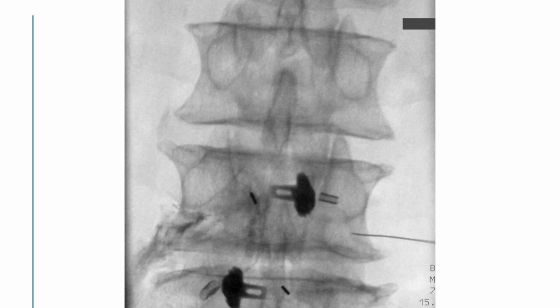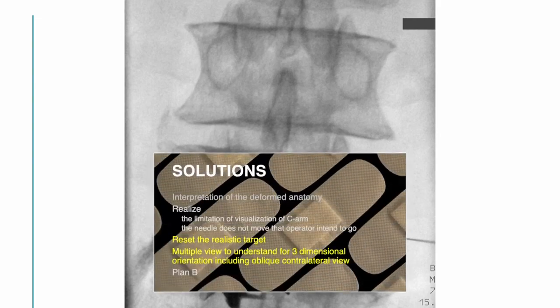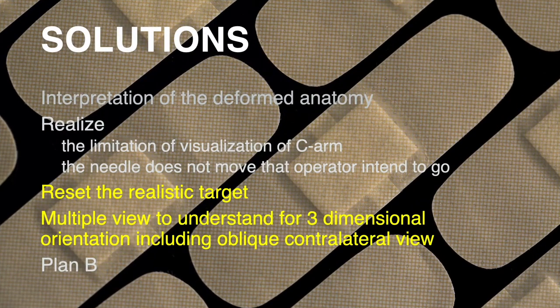It is the AP view. How deeply must I push the needle to make a good contrast spread? The needed needle depth differs from the classical sub-particular approach because it is off the ideal target. Do I need a lateral radiograph? Reset the realistic target at that point and take advantage of multiple views to understand the three-dimensional orientation.